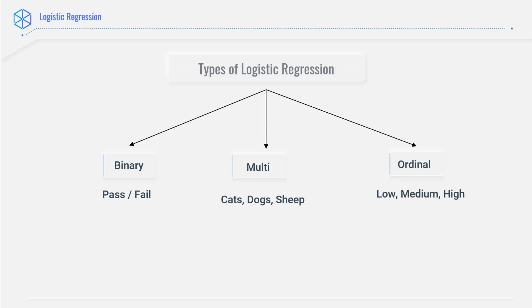What are the types of logistic regression? Basically we can classify them as binary, multi, and ordinal logistic regression.